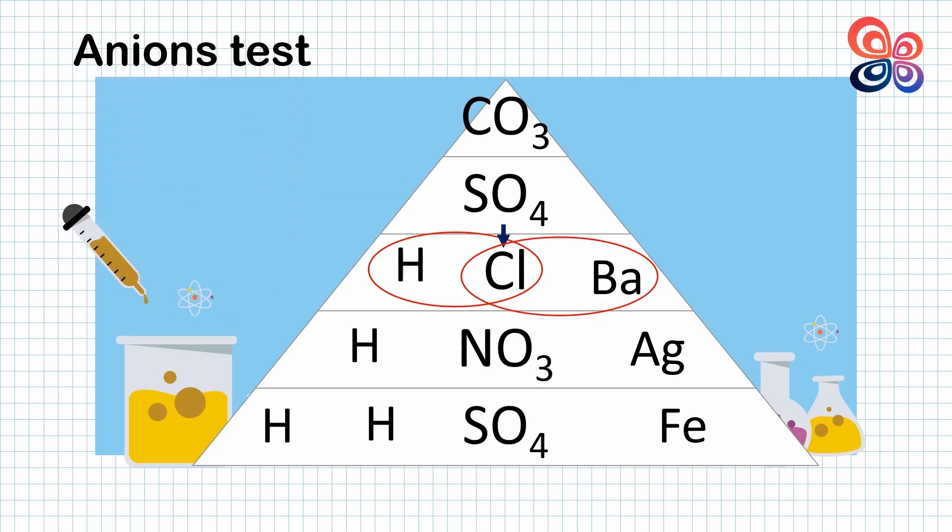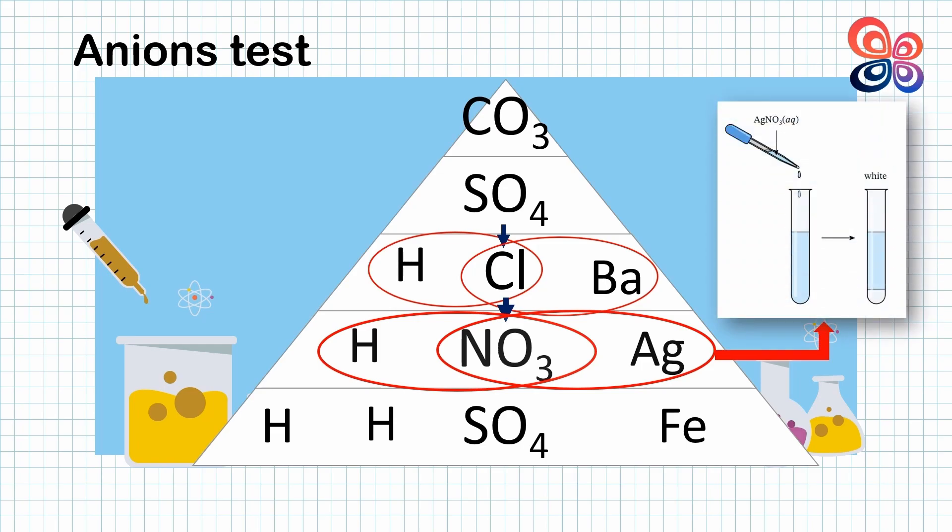Third is chloride ion test. Follow the same step as sulfate by looking at the below of chloride ion. It is nitrate. For this test, dilute nitric acid is added followed by the silver nitrate solution. As a result, the white precipitate is obtained.